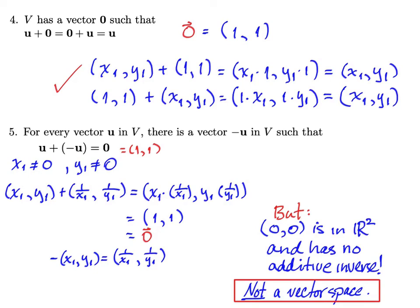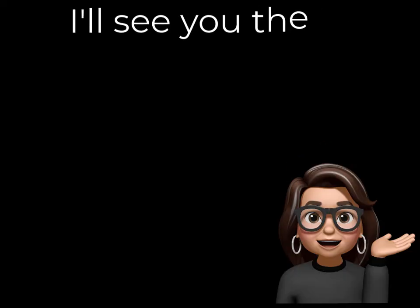All right, so that was an example of something that is not a vector space. As long as you can find one of the 10 axioms that fails, and you can prove that it fails, you're done. You've proven that it's not a vector space. All right, I'll see you in the next video.